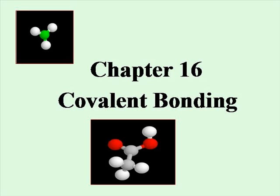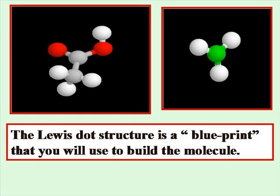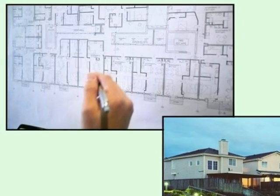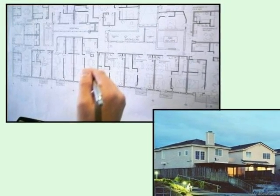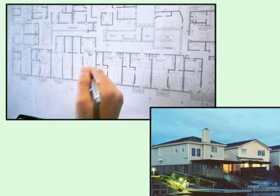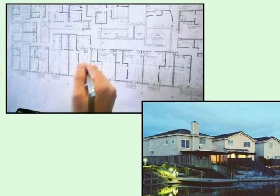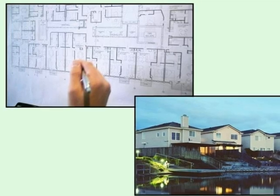Chapter 16: Covalent Bonding. The Lewis dot structure is a blueprint that you will use to build your molecule. Just like the blueprint of a house doesn't actually look like the house, your Lewis dot structure will not look like your molecule. It will be what you use to help build your molecule.